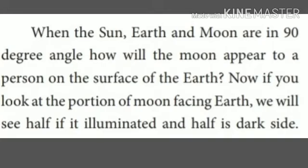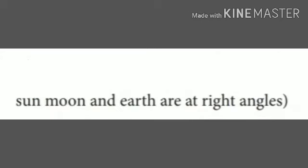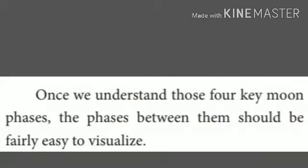When the sun, earth and moon are at a 90-degree angle, how will the moon appear to a person on the surface of the earth? If you look at the portion of the moon facing earth, we will see half of it illuminated and half is the dark side. Thus the moon is half moon. The half moon during the waxing period is called the first quarter, and the half moon during the waning period is called the third quarter. The figure shows the sun, moon and earth at right angles. Once we understand those four key moon phases, the phases between them should be fairly easy to visualize.